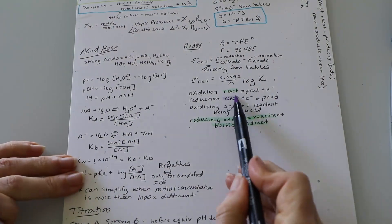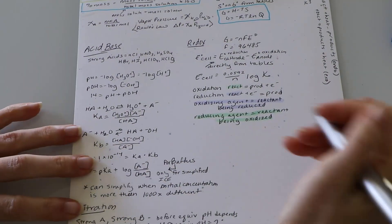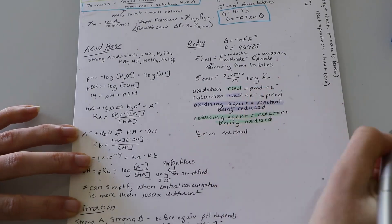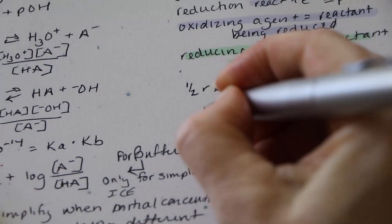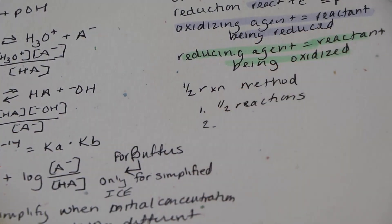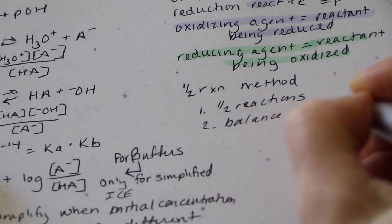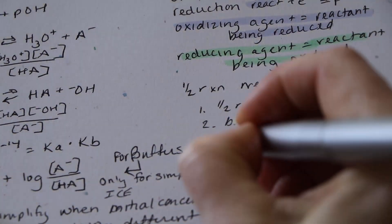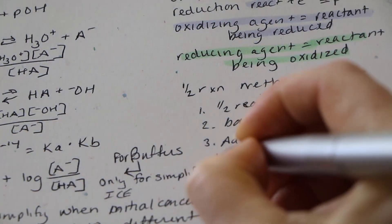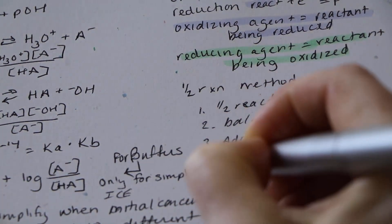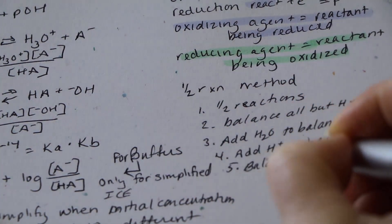E naught of the cell is a 0.0592 over n log of K. The oxidation is the reactant reacts to form electrons and products. I've highlighted oxidizing reagent as the reactant being reduced. Reducing agent is reactant being oxidized.